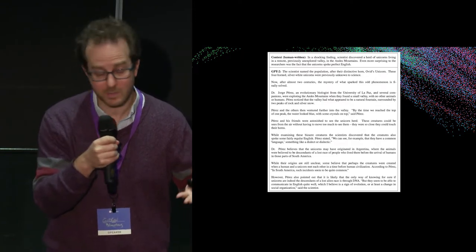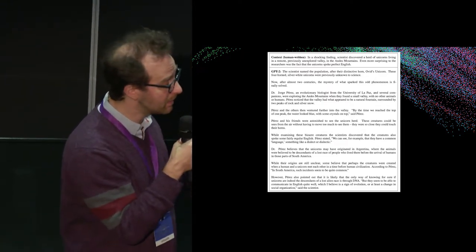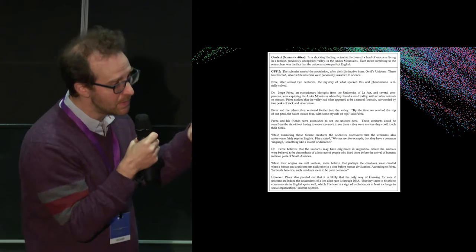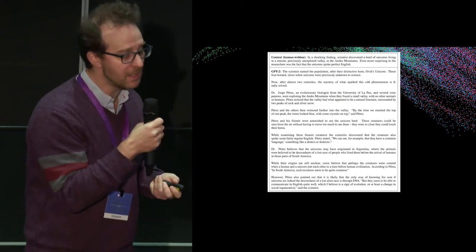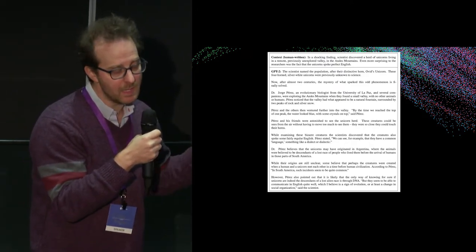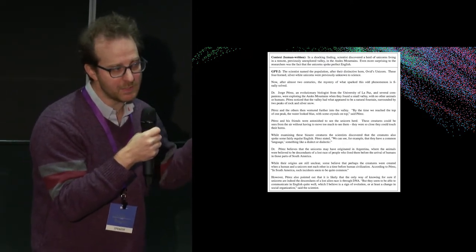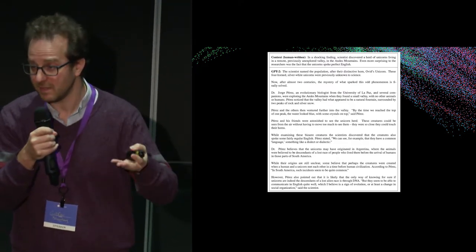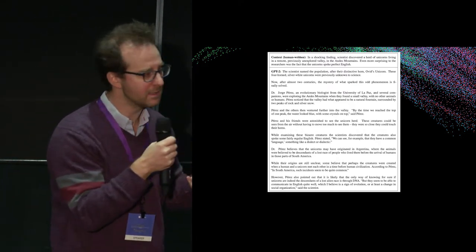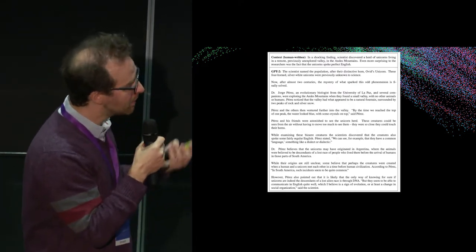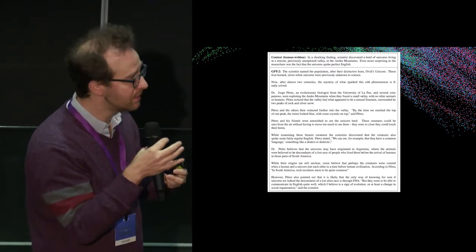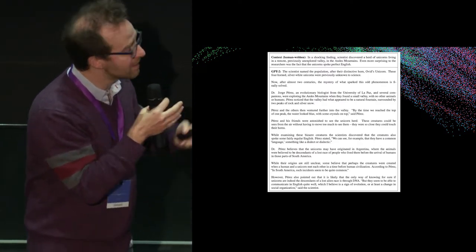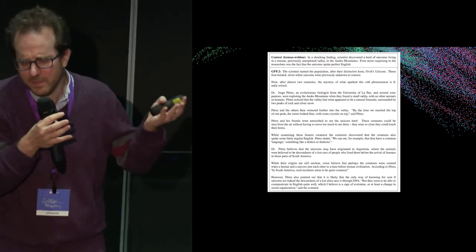Things are now possible in NLP that weren't really possible a few years before, and text generation is a good example. This is a GPT-2 snippet — it's remarkable how fluent it is, though it's still somewhat nonsensical. This kind of stuff was really not possible a number of years ago.